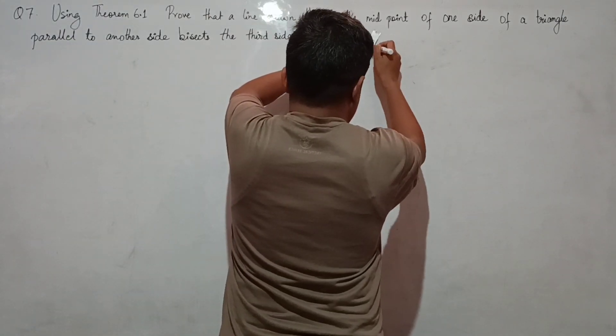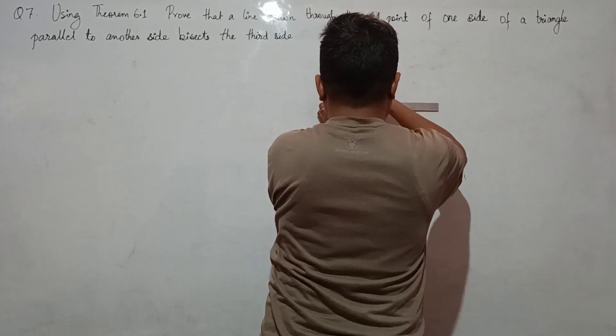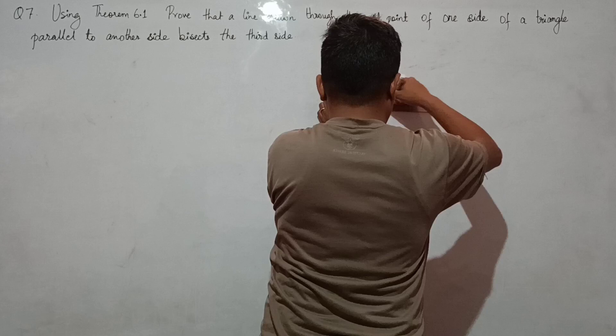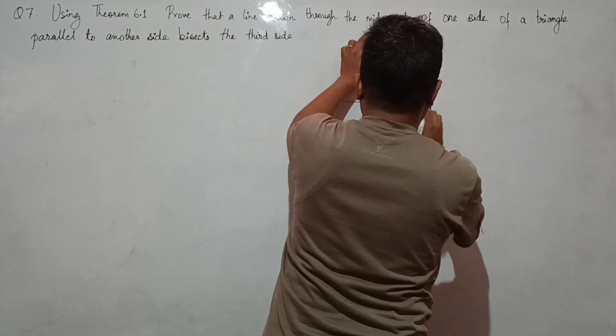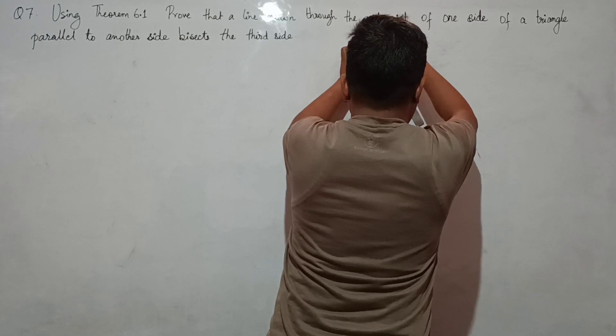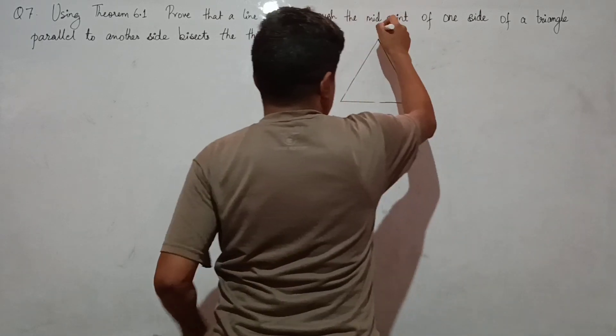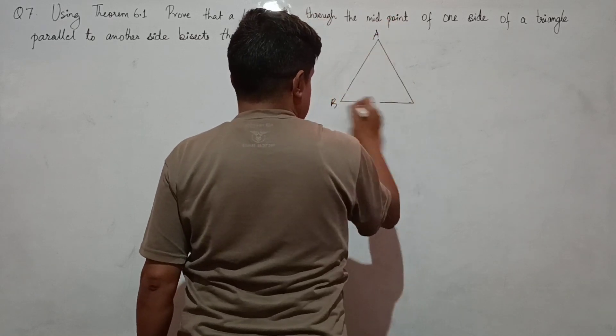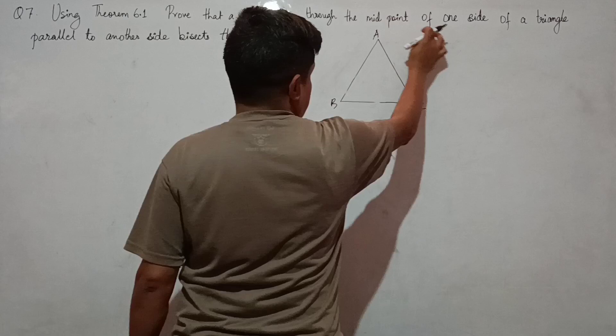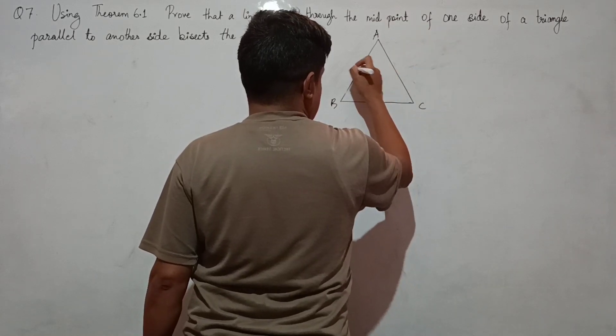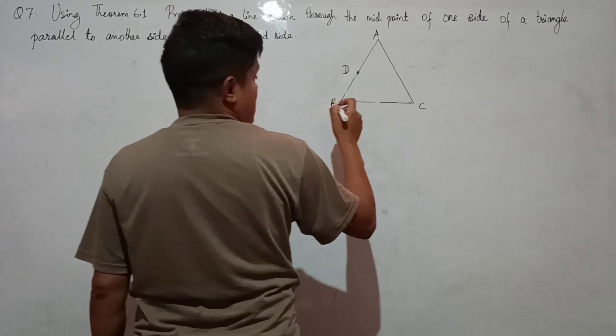Draw a triangle ABC. So to prove that a line drawn through the midpoint, let's say D be the midpoint of one side of the triangle.